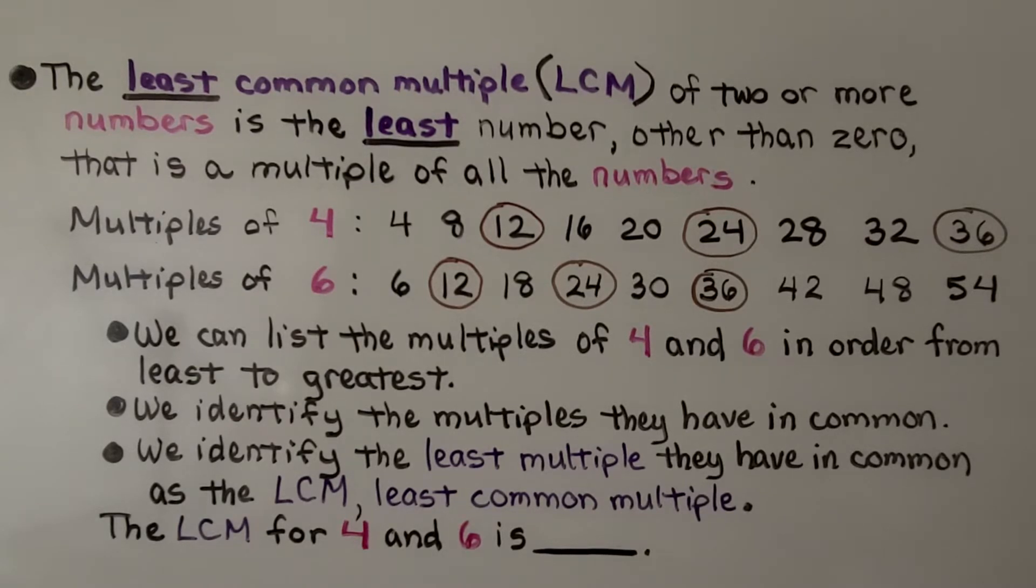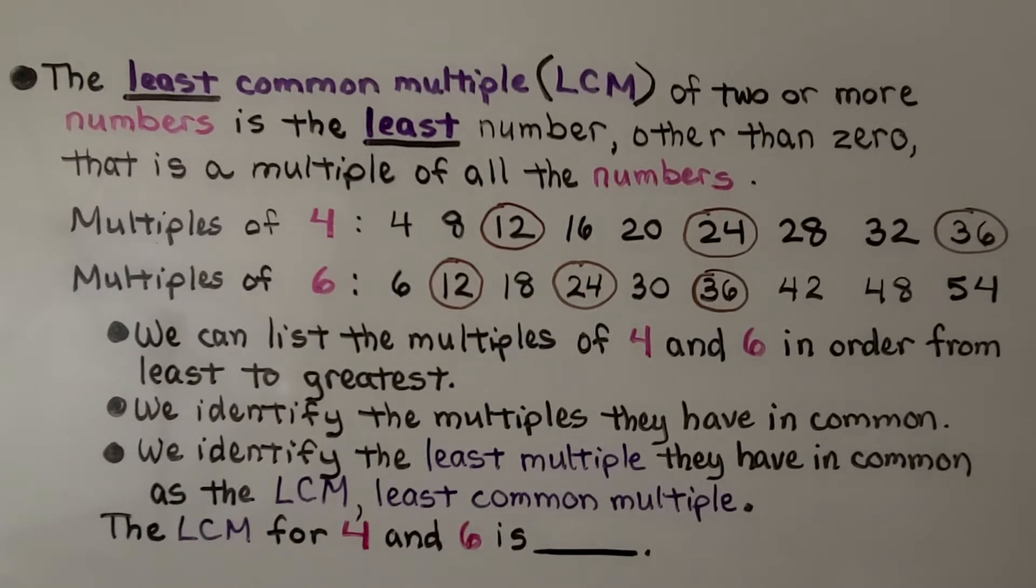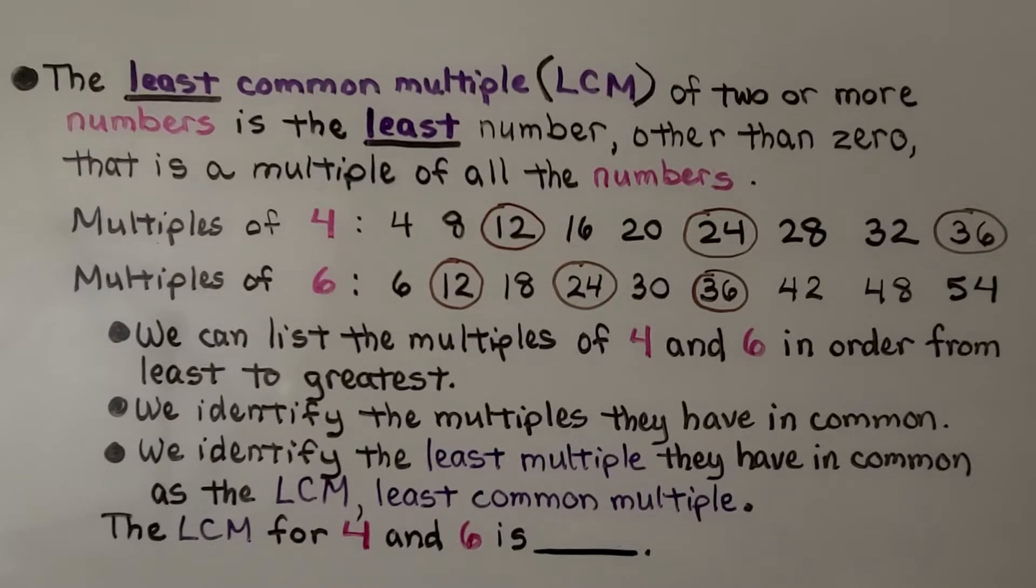The least common multiple, LCM, of two or more numbers is the least number other than zero that is a multiple of all the numbers.